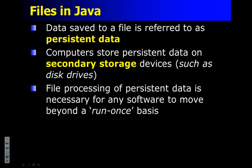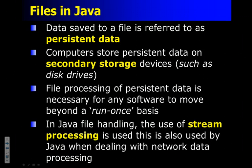The processing of persistent data is necessary so that your software can go beyond just software that runs once — in other words, it can remember things for the next time it runs. Like, for example, a set of high scores in a game. In Java, this idea of processing data as a stream is a big part of what Java uses for a lot of things. Stream handling is a big part of what's going on here.